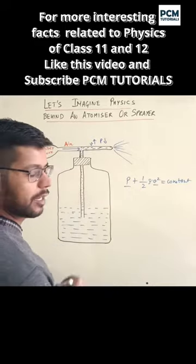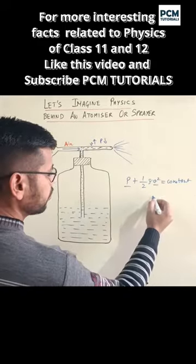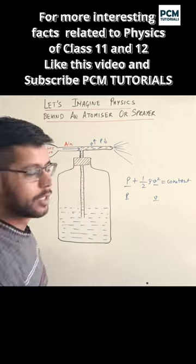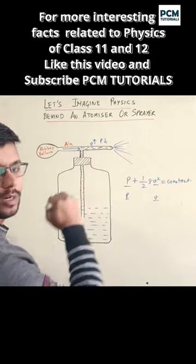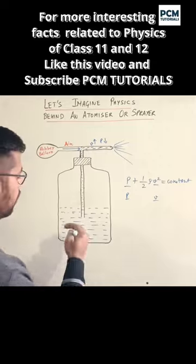Which means if you reduce the velocity, the pressure will increase to keep it constant. But if velocity increases, the pressure will get reduced. The pressure will be lower in this area.